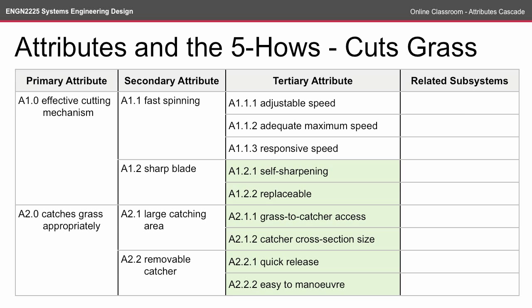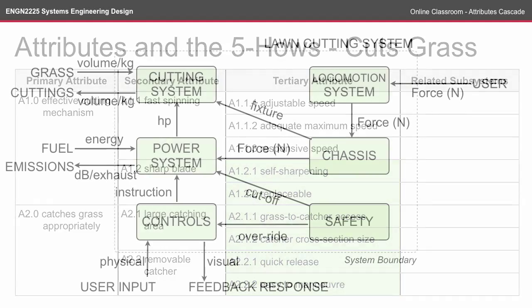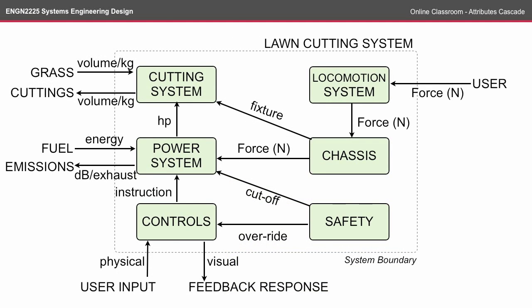Here we have a completed list of all of the tertiary attributes and the next step is to look at how these tertiary attributes relate to your system interface. From the system interface online classroom we have the cutting system, the power system, the control system, the locomotion system, the chassis and the safety subsystems. These are all of the subsystems within our lawn cutting system, and what we want to do is relate each of these tertiary attributes to one of the subsystems.